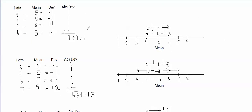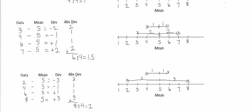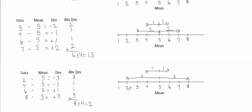We can see that the first set of four answers has the lowest mean absolute deviation of 1. The second set has a higher mean absolute deviation of 1.5. And the third set has the highest mean absolute deviation of 2.